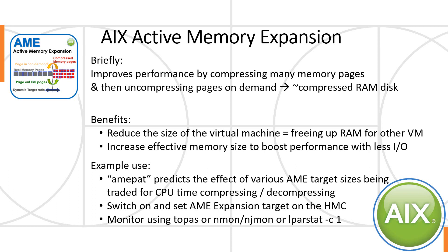A typical example use is the AMEPAT command to predict the effects of various AME target sizes. You're having a trade-off between using more CPU and gaining more effective memory. You can switch it on and ask AME to not expand memory, and it's there whenever you need it. You can dynamically change the expansion target factor on the HMC while the machine is actually running. You can also monitor AME with Topaz, NMon, NJMon, or LPOSDAT-C, so you can see the effects of what's going on and the benefits you're getting.